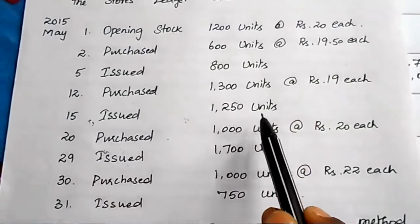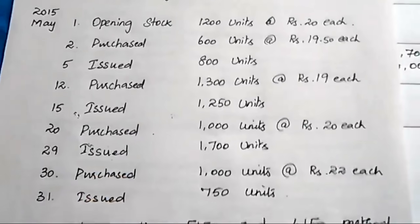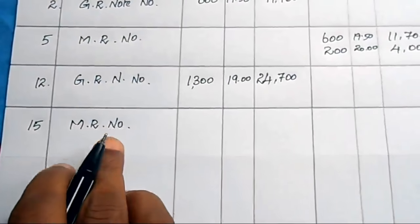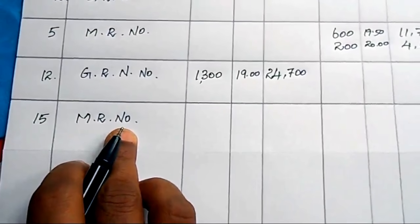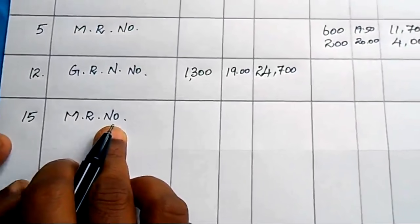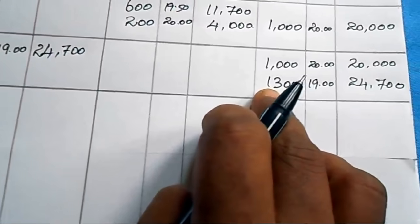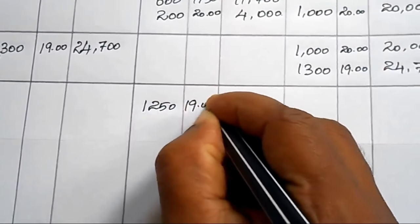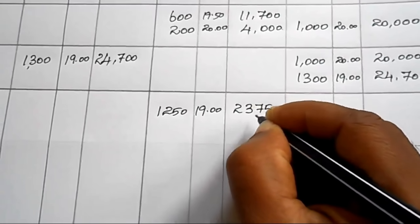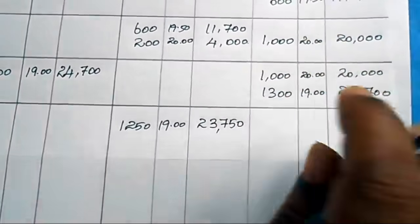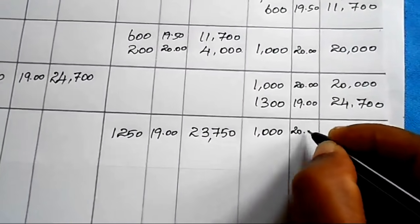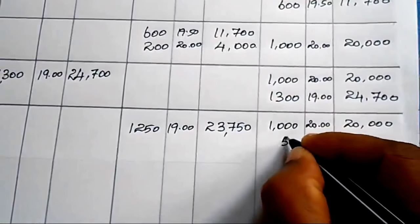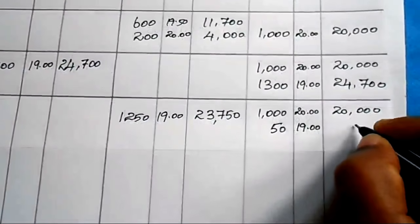On 15th May, issued 1250 units. Write the Material Requisition number. According to LIFO, issue from the last lot — 1300 units at ₹19. Issue 1250 units at ₹19 = ₹23,750. Balance: from the 1300 lot, 1300 − 1250 = 50 units at ₹19 = ₹950. The 1000 units at ₹20 = ₹20,000 are untouched. Total balance: 1050 units.